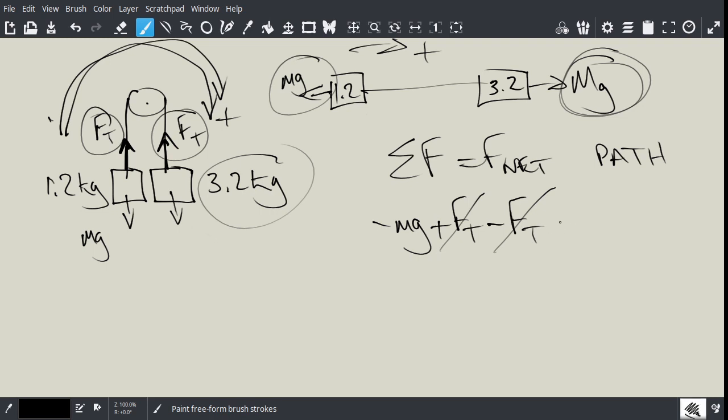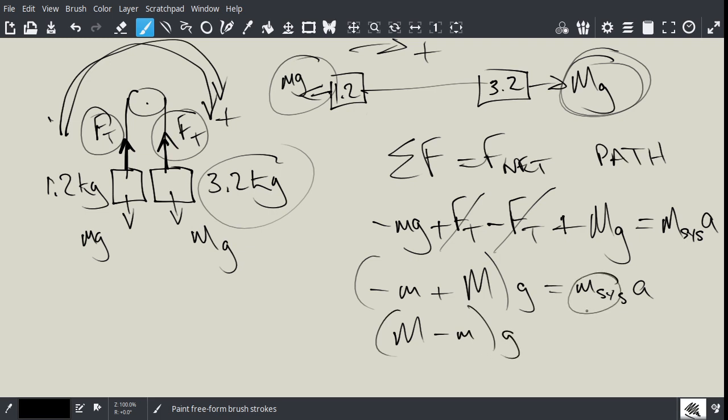So now, I have plus big MG here. And so this all is going to equal the mass of the system times acceleration. Okay, so we can now factor out G here. So, essentially, if I rearrange the order, it's just negative little M plus the big M times G equals M_sys A. And then I'll just rearrange this, so I'll just go big M minus little M times G, and then M_sys is simply little M plus big M. So I'll divide this side by M_sys and divide this side, and I'll get this equals A.